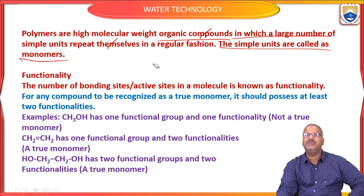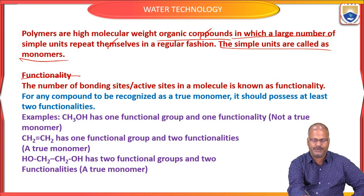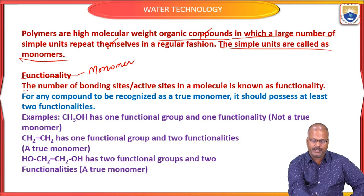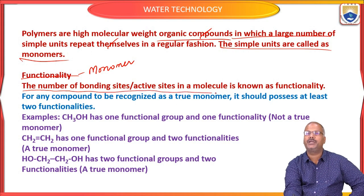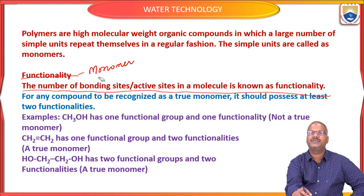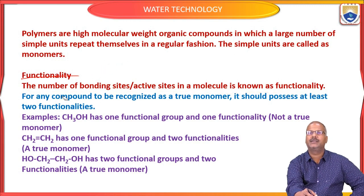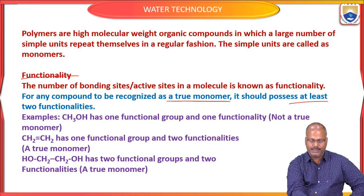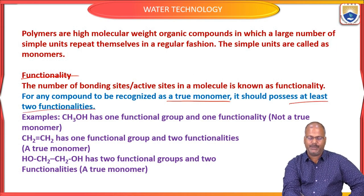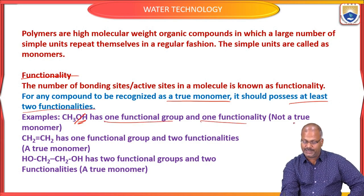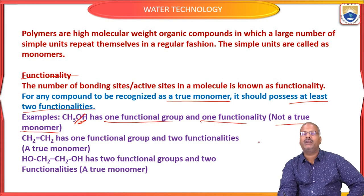Whether all small molecules can be used as a monomer? No. It needs a functionality. The number of bonding sites or active sites in a molecule is known as its functionality. For any compound to be recognized as a true monomer, it should possess at least two functionalities. For example, methanol (CH₃OH) has only one functional group — OH — so it is not a true monomer.